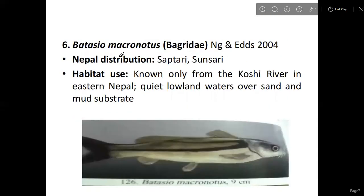The next species is Batasio macronotus from the Bagridae family. Its distribution in Nepal includes the Kosi River in eastern Nepal. Its habitat is lowland waters with high gradient, over sand and mud substrate.